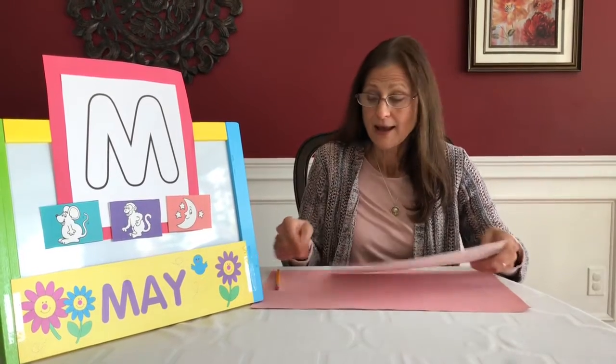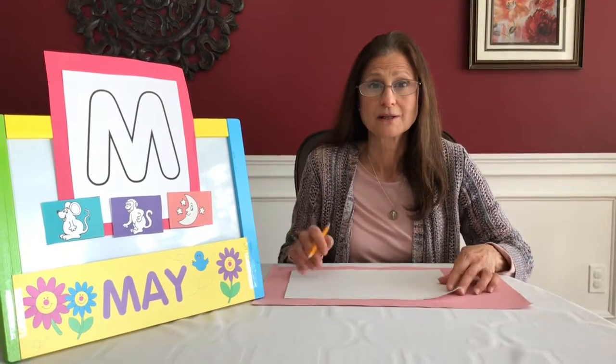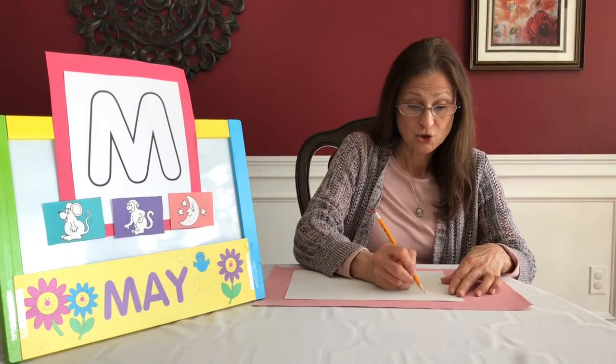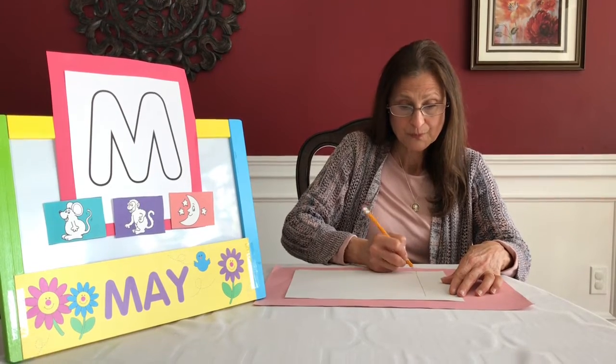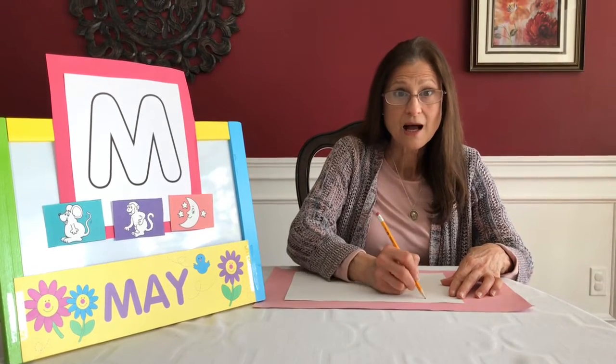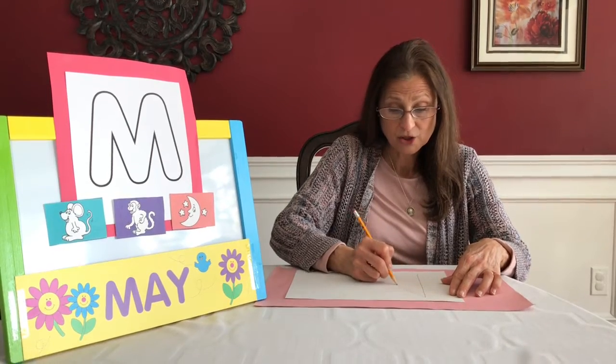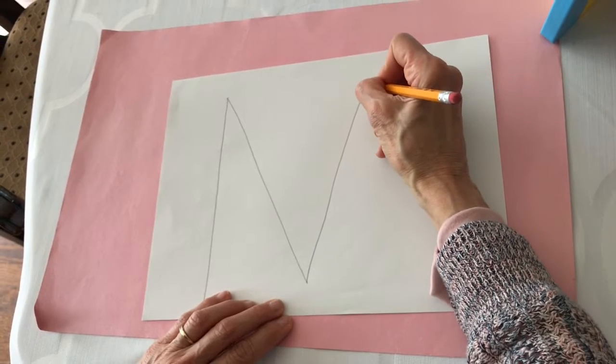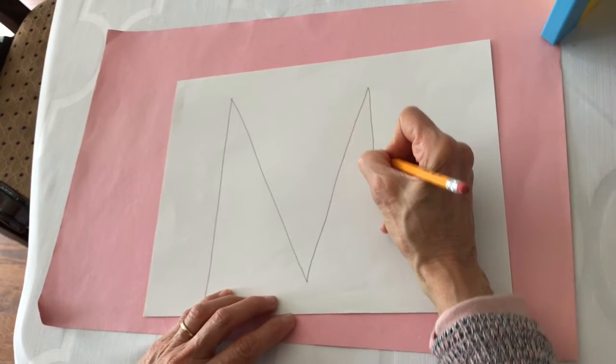Now we are going to write our letter M. Maybe someone at your house can help you with this activity. Using our white piece of paper and our pencil, let's start making the letter M. It's a straight line down. Go back to the top and make a diagonal line all the way down. Make a diagonal line up all the way to the top and a straight line down.